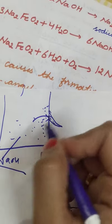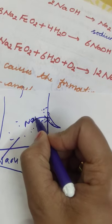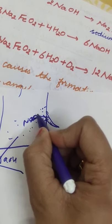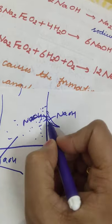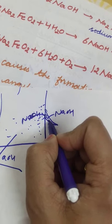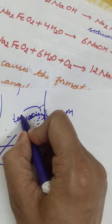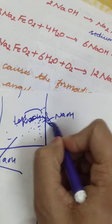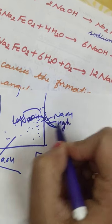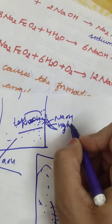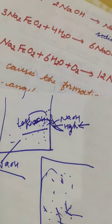Now, evaporation will continue in this area. Here there is NaOH, but where evaporation is higher, the concentration of NaOH will be less compared to the other region. So one area has less NaOH concentration and the other has high NaOH concentration.